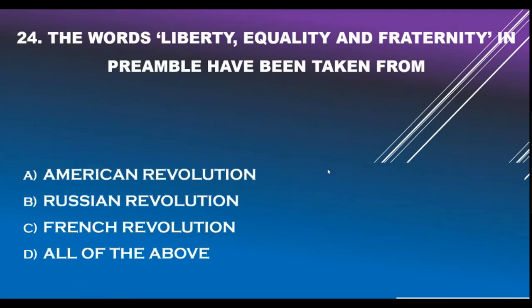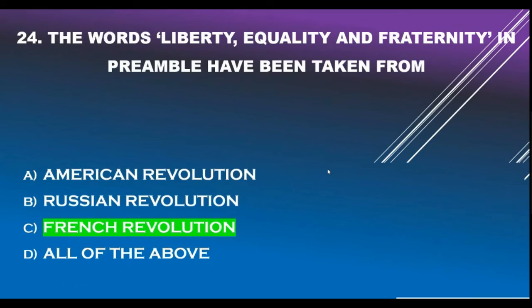Question number 24. The words 'liberty, equality and fraternity' in the Preamble have been taken from: Option A - American Revolution. Option B - Russian Revolution. Option C - French Revolution. Option D - All of the above. Correct answer is Option C: French Revolution.